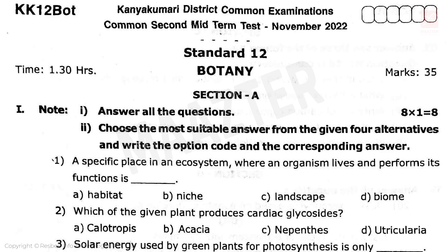This is the second mid-term test. Section A has multiple sections, each question carries one mark. First question: a specific place in an ecosystem where an organism lives and performs its function. The correct answer is option A: habitat.